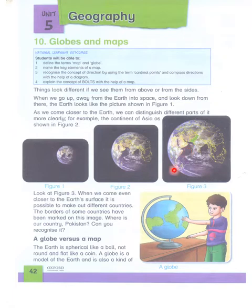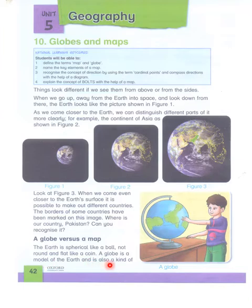Globe versus a map: the earth is spherical like a ball, but not round and flat like a coin. A globe is a model of the earth and is also a kind of map.